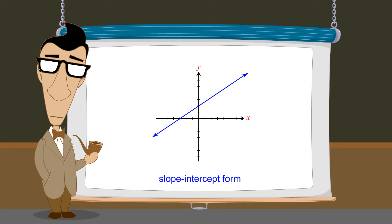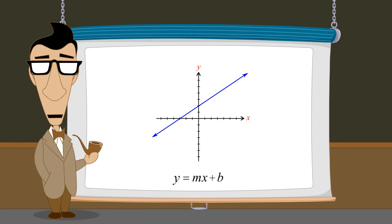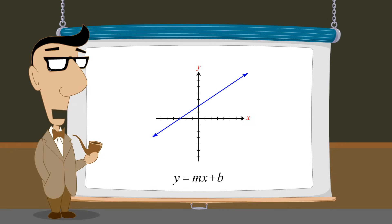The slope-intercept form is written as y equals mx plus b, where the constant m is the line's slope and the constant b is the y-coordinate of the point where the line crosses the y-axis.